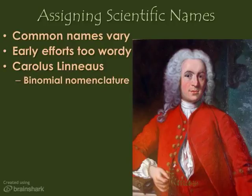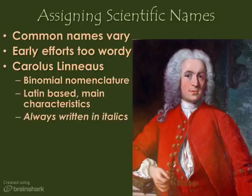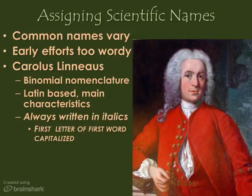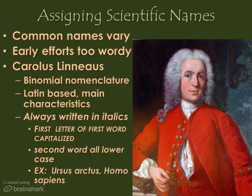Binomial nomenclature is a two-word naming system — that's exactly what binomial nomenclature means: two words, two names. In Linnaeus' system, each organism has a two-word scientific name that is often Latin-based, sometimes Greek, and the terms describe a major characteristic of the organism. These names are written in a very specific way: always in italics, the first letter of the first word is always capitalized, and the second word is all lowercase.